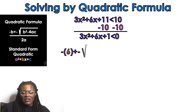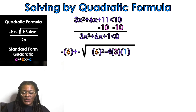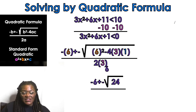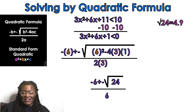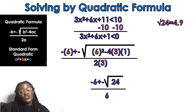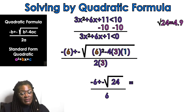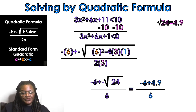Using the quadratic formula, color-coded: negative B so negative 6, plus or minus the square root of 6 squared minus 4 times a (which is 3) times c (which is 1), all over 2 times 3. Simplifying under the radical using PEMDAS, I get negative 6 plus or minus the square root of 24. The square root of 24 is approximately 4.9.